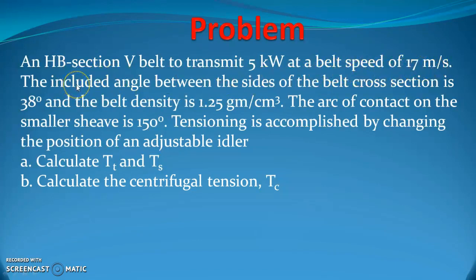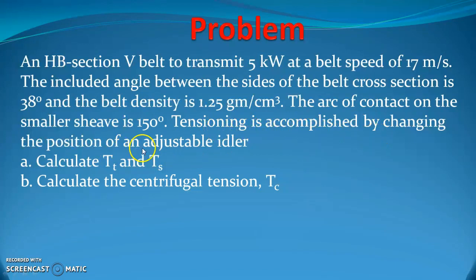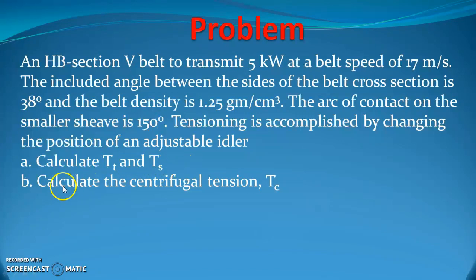The included angle between the sides of the belt cross section is 38 degree and the belt density is 1.25 gram per centimeter cube. The arc of contact on the smaller sheave is 150 degree. Tensioning is accomplished by changing the position of an adjustable idler. Calculate TT and TS — tension in the tight side and tension in the slack side of the belt. Also calculate the centrifugal tension TC.